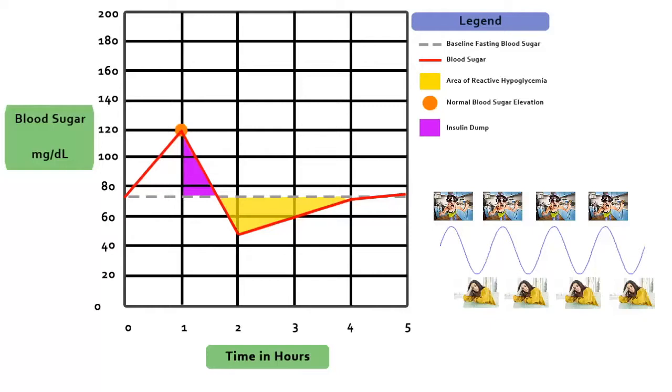Rarely do you find hypoglycemia on a fasting level. The real test is a glucose tolerance test where a person drinks a thick sugary liquid, and the blood sugar is plotted over a five-hour period.